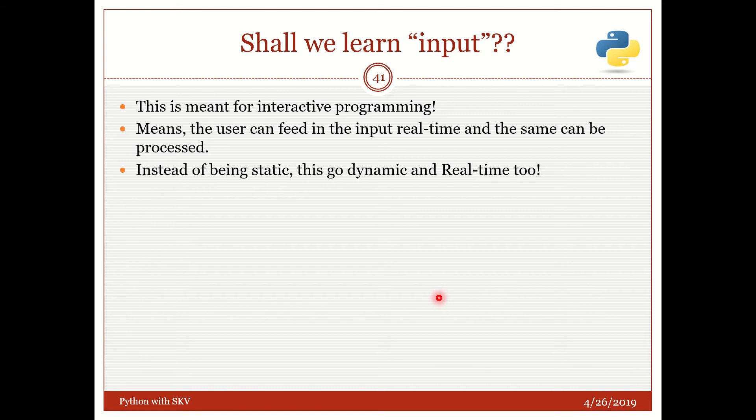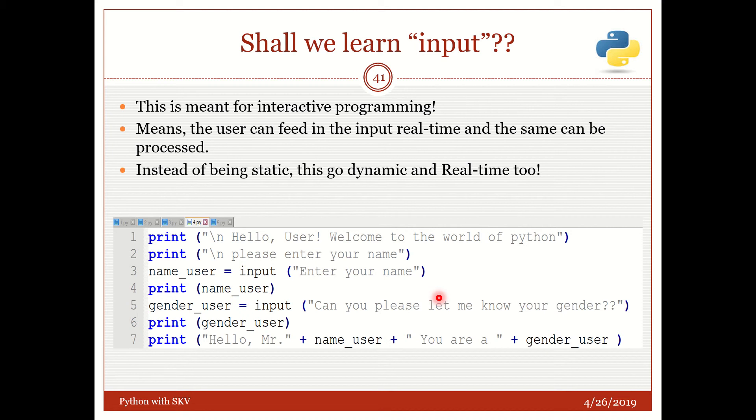Not all the times we can go with the static way of handling the input from the user, which means I can already assign a value to the variable and then I can operate on it. That might not work every time, right? At times we might want the user to feed the input real time and then to process it and to give him the output during the runtime itself, real time itself.